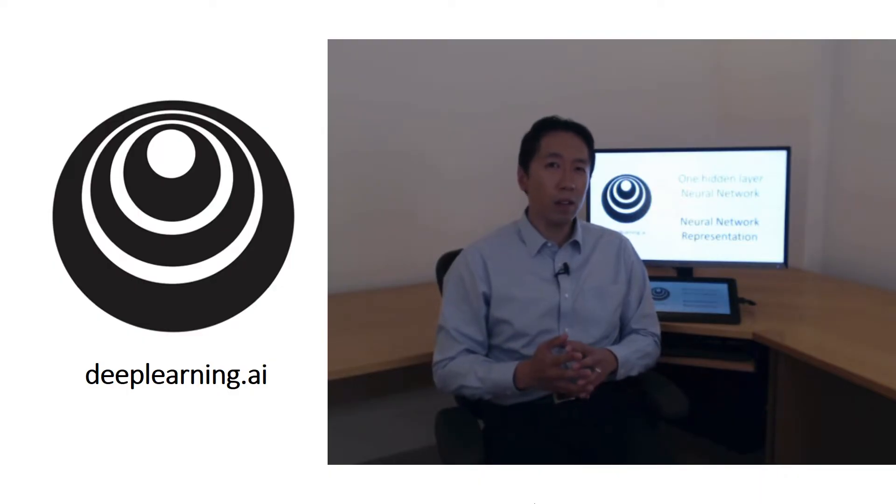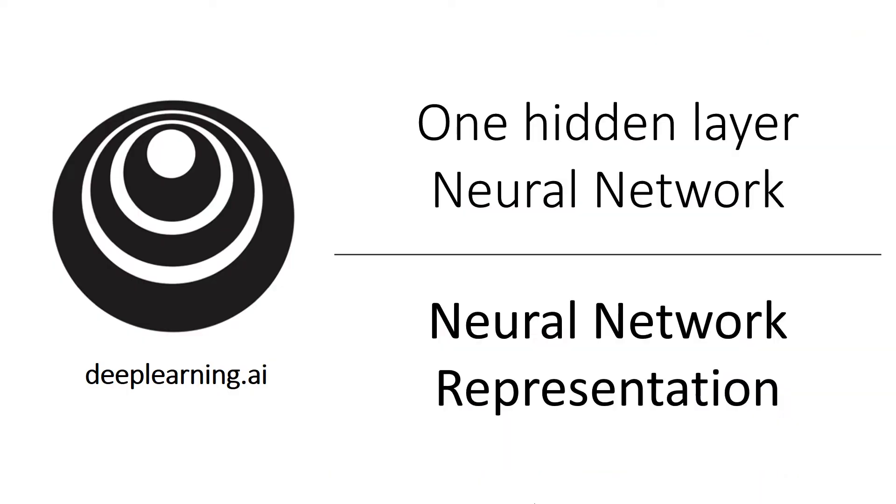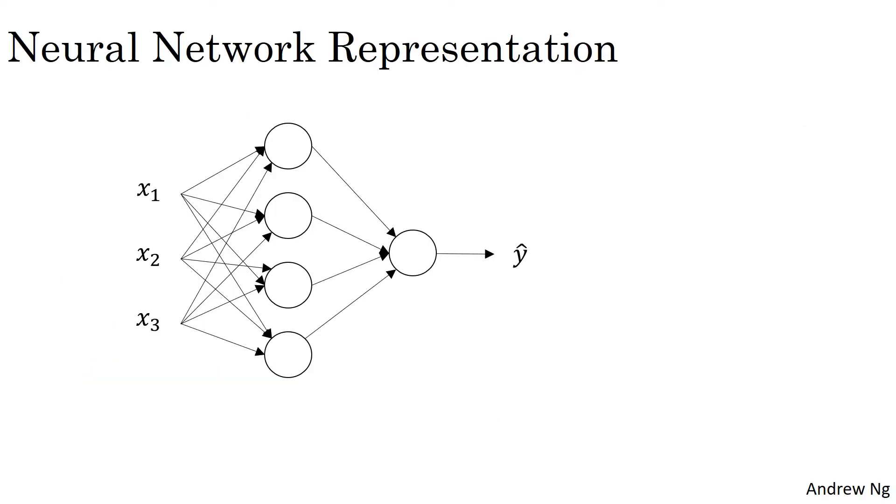And we'll start with focusing on the case of neural networks with what's called a single hidden layer. Here's a picture of a neural network. Let's give different parts of these pictures some names.